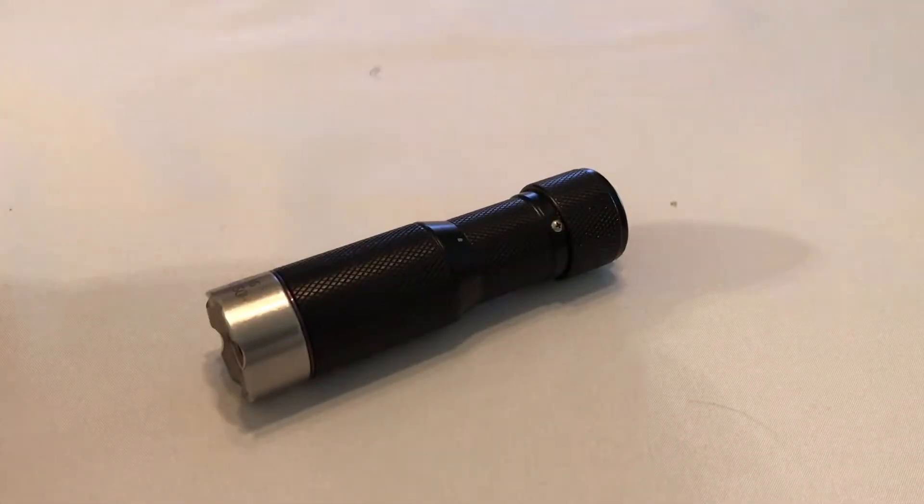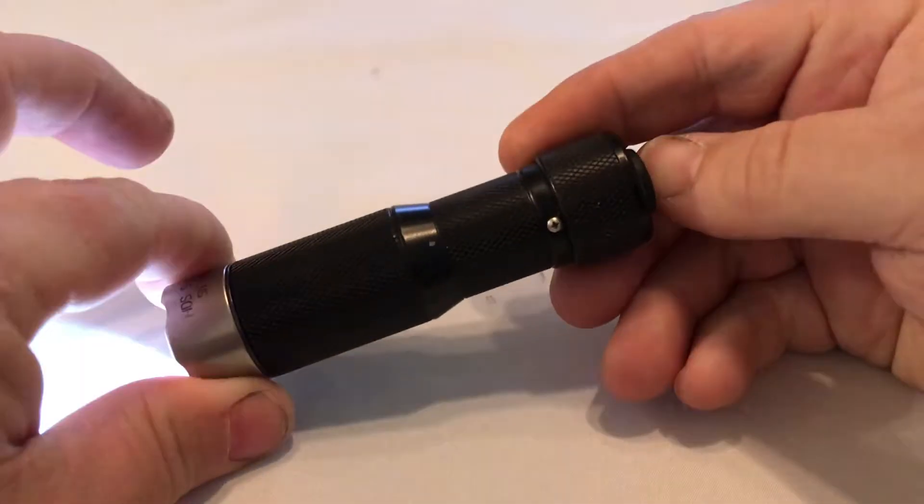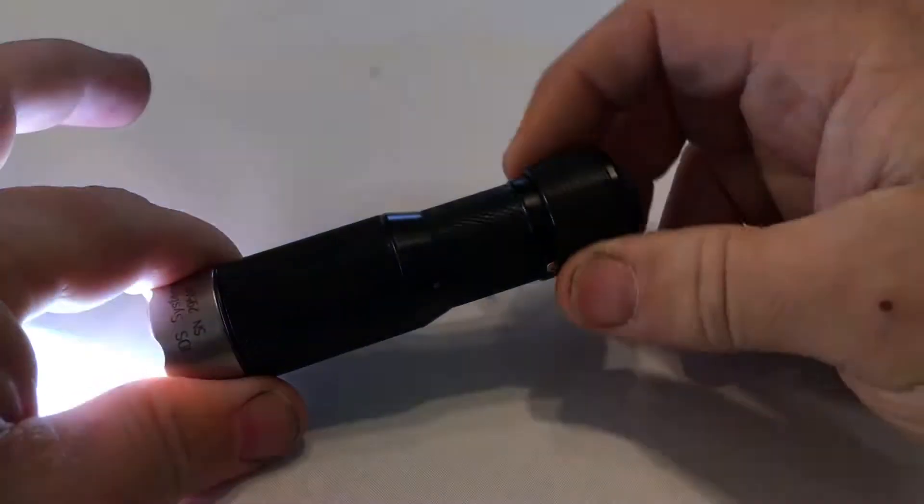I'm optimizing the presets in your HDS EDC flashlight. As you know, there are four presets. B is where the light turns on. That's your rotary control.